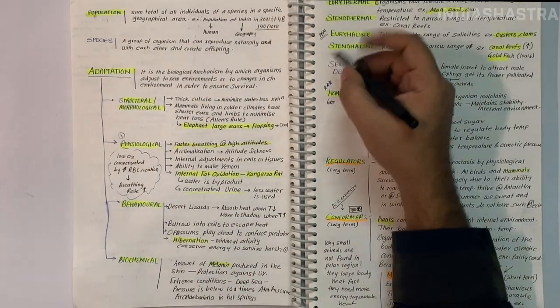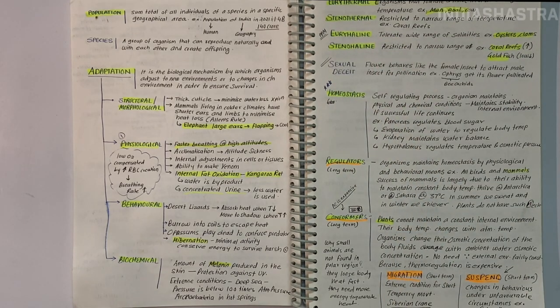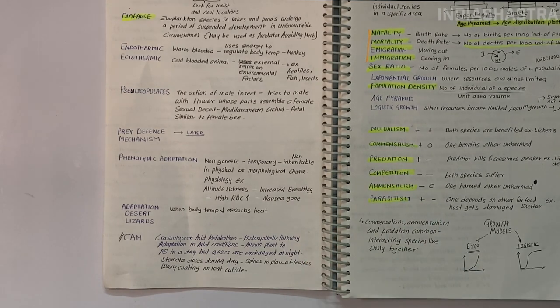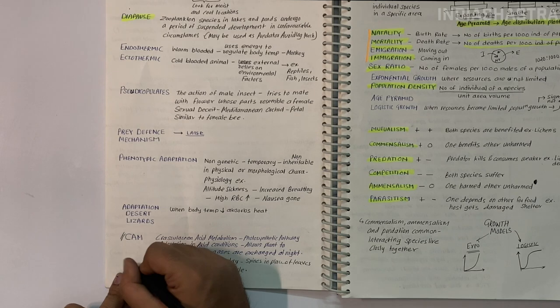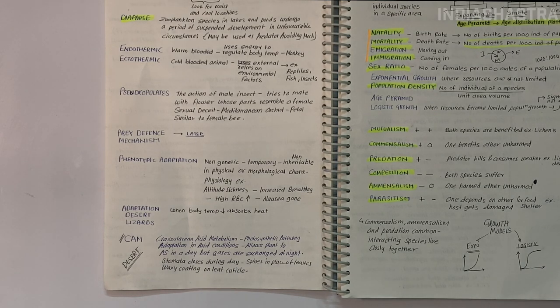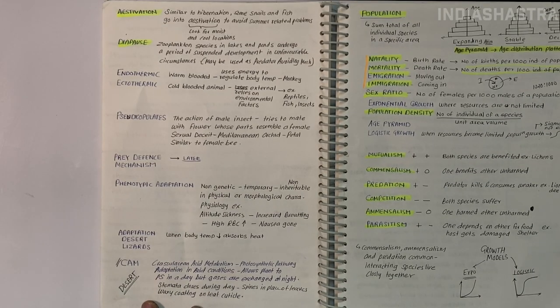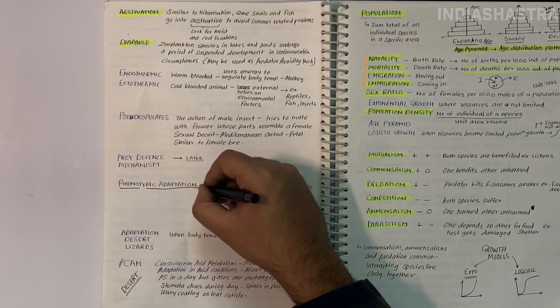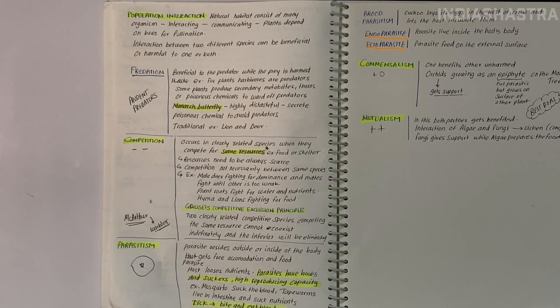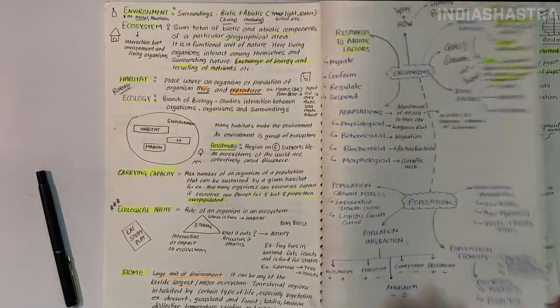Sexual deceit is an example of mutualism where the flower behaves like the female insect to attract male insect for pollination. Orchid flowers are modified so one petal resembles the female insect. CAM - Crassulacean Acid Metabolism or CAM Photosynthesis is a carbon fixation pathway that evolved in some plants as adaptation to arid conditions. It allows plants to photosynthesize during day but exchange gases at night. Phenotypic adaptation involves changes in the body in response to genetic mutation or environmental changes to cope with environmental conditions in their natural habitats.